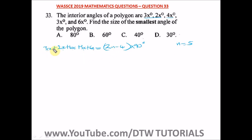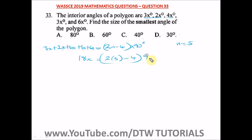Adding the coefficients: 3 + 2 is 5, plus 4 is 9, plus 3 is 12, plus 6 is 18. So we have 18x. Substituting n = 5 into the formula: (2 × 5 − 4) × 90 = 6 × 90 = 540 degrees.